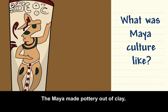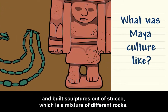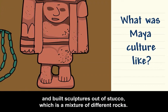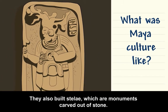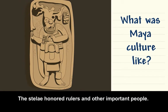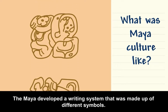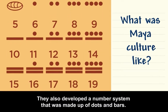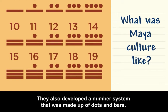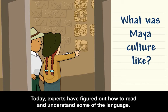The Maya made pottery out of clay, created jewelry out of jade, and built sculptures out of stucco, which is a mixture of different rocks. They also built stele, which are monuments carved out of stone. The stele honored rulers and other important people. The Maya developed a writing system made up of different symbols, and also a number system made up of dots and bars.